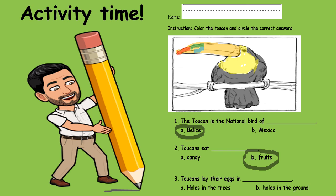Number three: Toucans lay their eggs in A. holes in the trees or B. holes in the ground. If you said A you are correct.